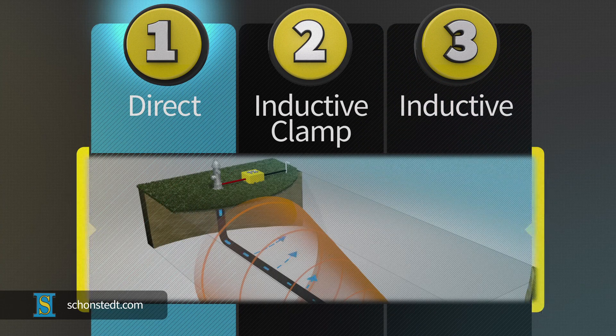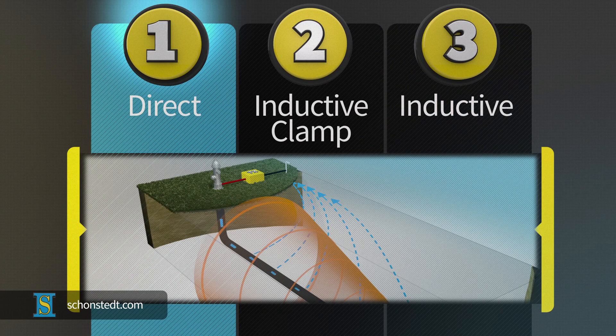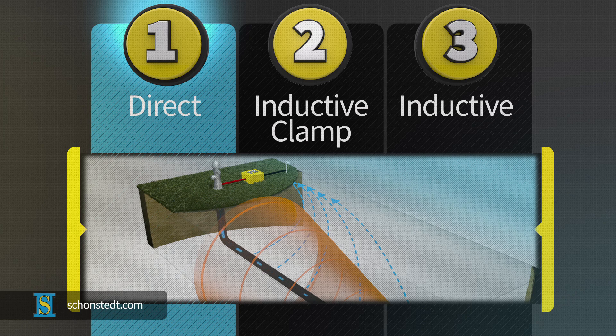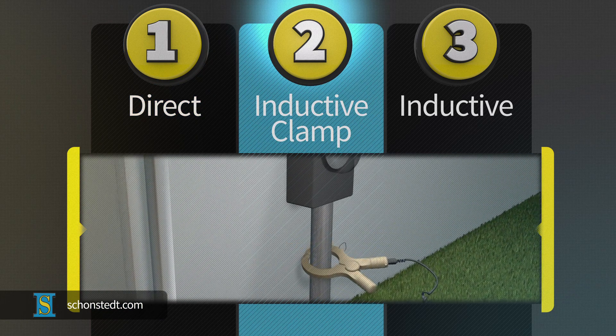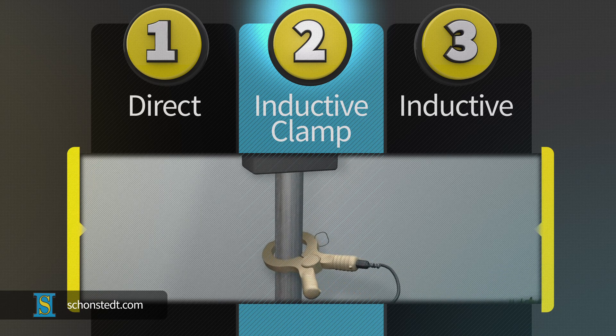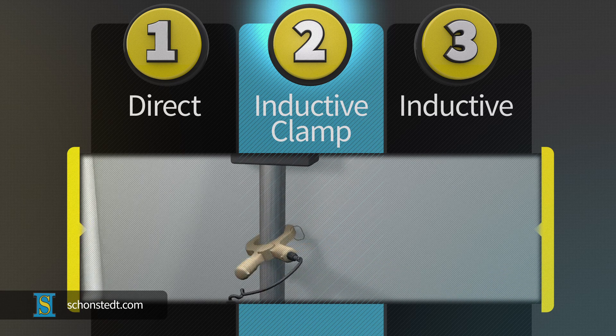The direct mode produces the largest amount of current and increases locating success. The inductive clamp mode produces less current, but it's a good choice when lack of access to the pipe or cable prevents you from using the direct mode.